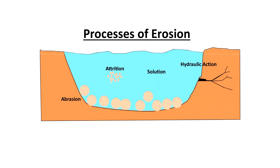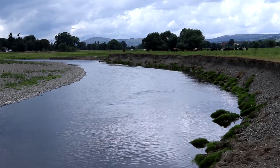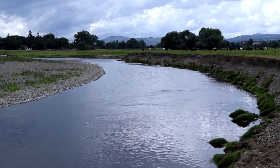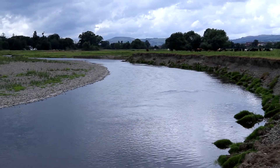We've got four types of erosion, starting off with hydraulic action, which is when the force of water hitting the riverbanks or riverbed causes erosion. Abrasion is when the load, which can include stones and pebbles, continuously hits the banks or bed as it's carried downstream.